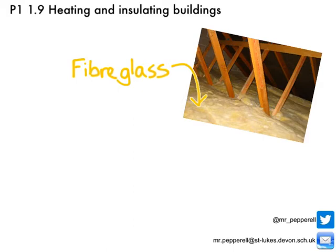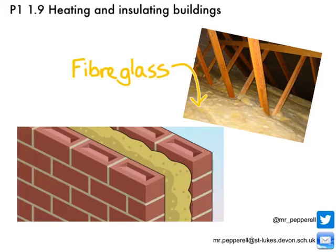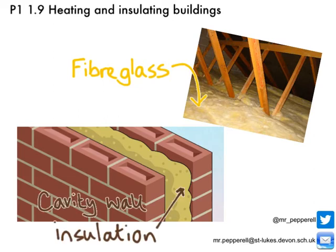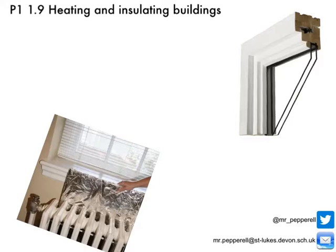The second thing you can do is use cavity wall insulation, put between the inner and outer walls of your house. It's made from an insulating material and it traps air in little pockets, stopping convection currents forming between the two layers of your wall which would lead to heat loss. You can also put aluminium foil behind your radiators, which reflects back any infrared radiation into the room, stopping it being conducted away through the wall.